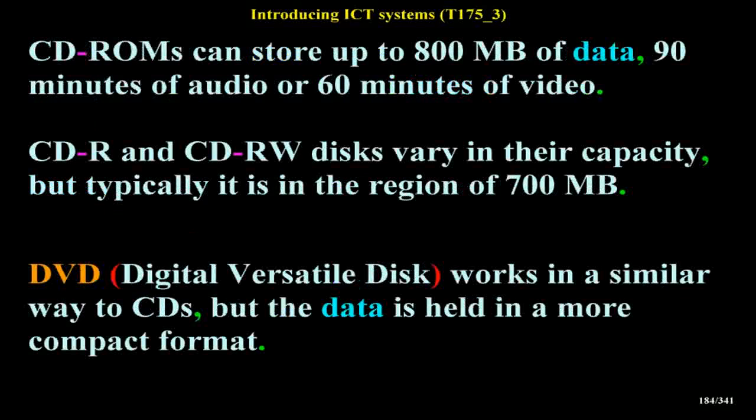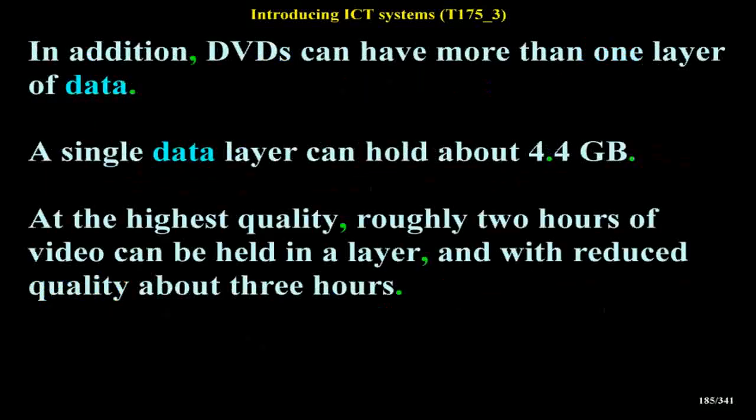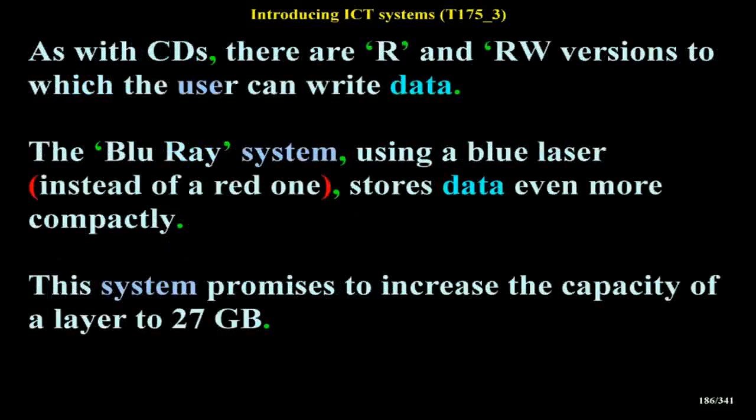DVD (digital versatile disk) works in a similar way to CDs, but the data is held in a more compact format. In addition, DVDs can have more than one layer of data. A single data layer can hold about 4.4 GB. At the highest quality, roughly 2 hours of video can be held in a layer, and with reduced quality about 3 hours. As with CDs, there are R and RW versions to which the user can write data.